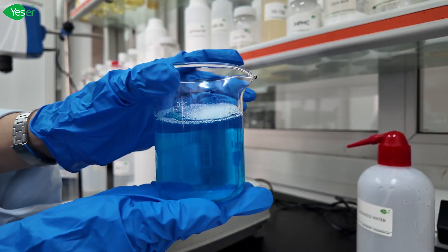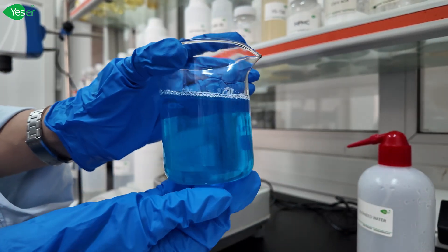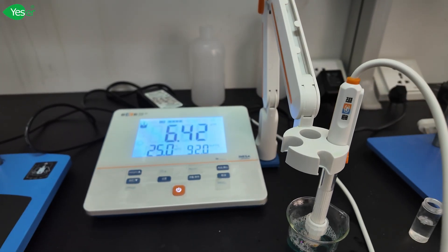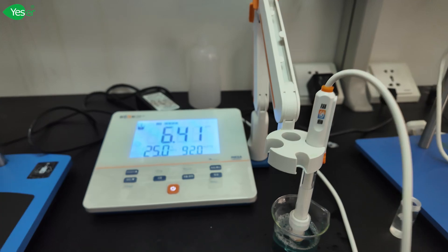Now that we have combined all the ingredients in our formula let's check the pH. As you can see guys the pH of our formula is at 6.42 so it is within the range that we desire.